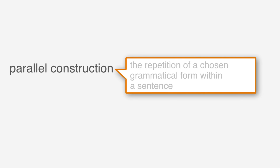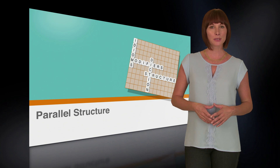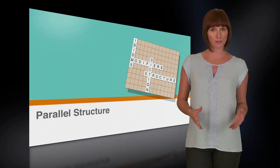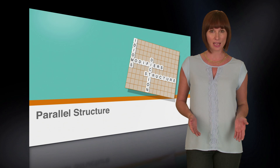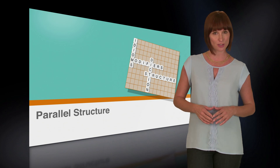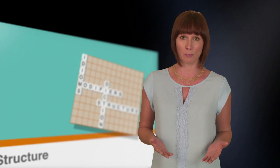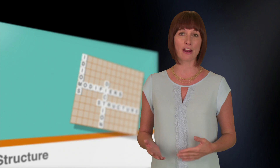But don't worry, we've got this. Let's start by defining parallel construction as it applies to grammar. Parallel construction is the repetition of a chosen grammatical form within a sentence. By using the same grammatical pattern for each compared item or idea in a sentence, you're creating a parallel construction. This is a helpful tool because it adds clarity and a rhythmic flow to your sentences.